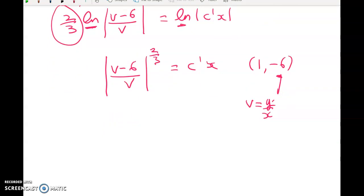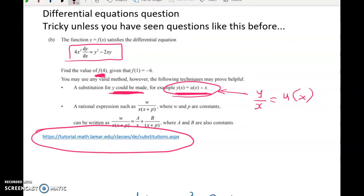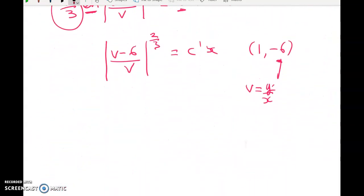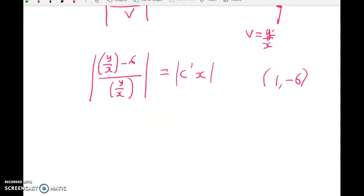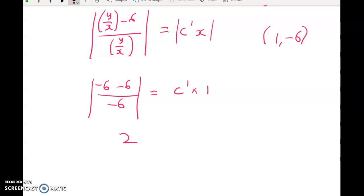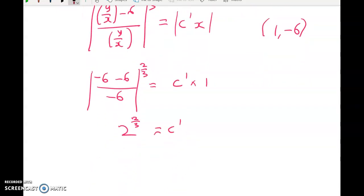we have to figure out the value of Y when X is 4. But it would also be nice to just get a general solution here. Okay, so what have we got? Well, we've got Y over X minus 6 divided by Y over X is equal to C dash of X. And we know, what do we know? We know that 1 negative 6 is on the curve. So we can substitute in. We've got negative 6 minus 6 divided by negative 6 is equal to C dash times 1. So negative 12 over negative 6 gives me 2, so 2 is equal to C dash. I don't think that's right. I think I've lost a two-thirds somewhere. I have. I've lost my two-thirds there. That's better. Okay, so we've got 2 to the power of two-thirds is equal to C dash.